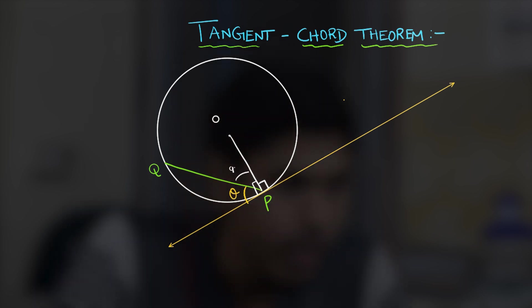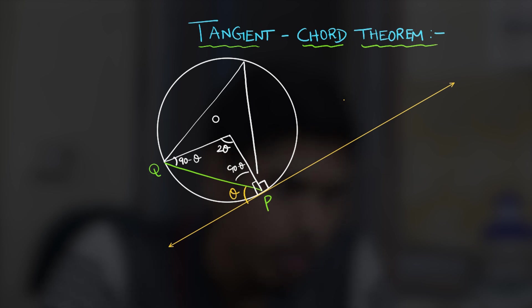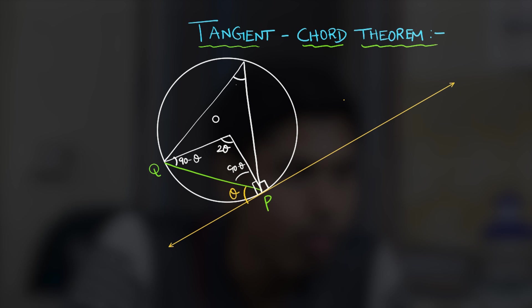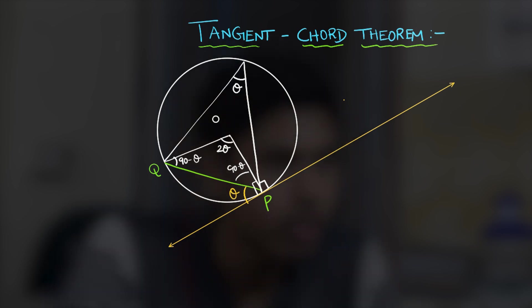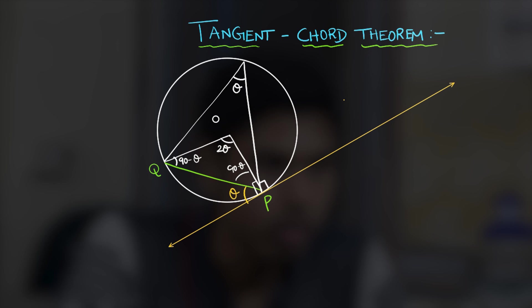So this is 90 minus theta. Well join OQ and observe OP equals OQ to get angle at Q to be also 90 minus theta and that ensures this angle to be 2 theta. Now you can figure out the angle subtended at the circumference that will be half of the angle subtended at the center. So we got this to be theta which is equal to the angle made by the chord with the tangent thus proving the tangent chord theorem.